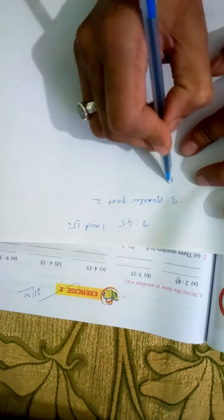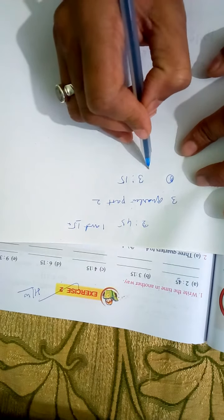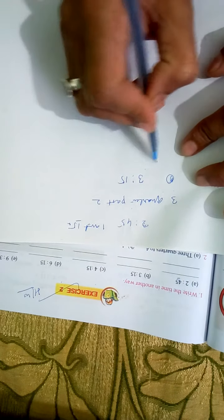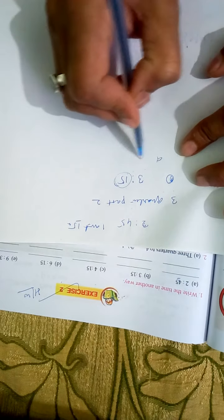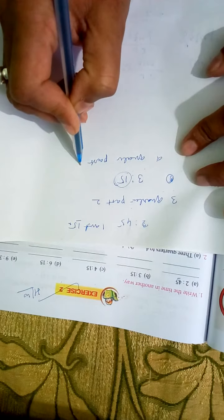Number B also, there is 3:15. That means a quarter past. 15 is 1 quarter, the 1 quarter past 3. Okay.